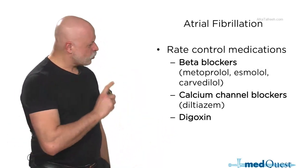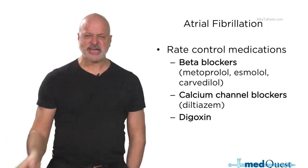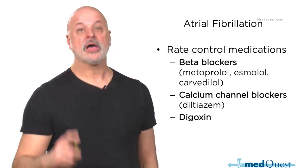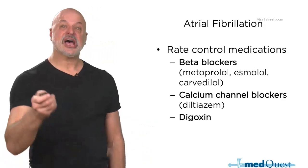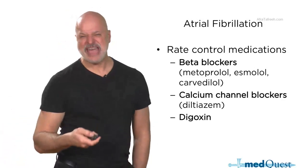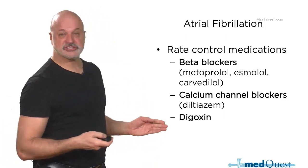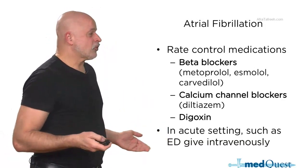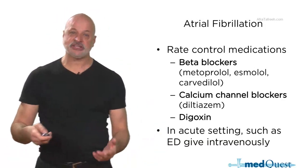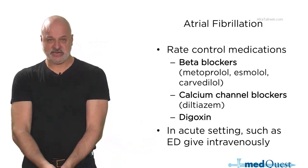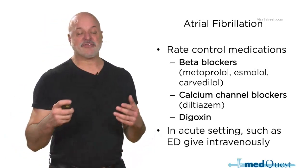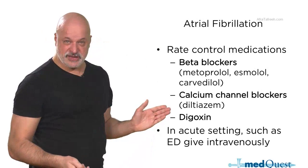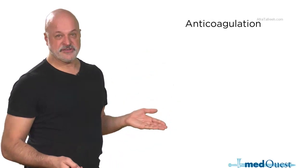There is a time when digoxin is actually better than the other medications — when somebody has hypotension — because digoxin is the only one that doesn't lower blood pressure. In the acute setting you'd give it intravenously for immediate effect, but if you're in the office, which is 99% of cases, oral therapy is sufficient.